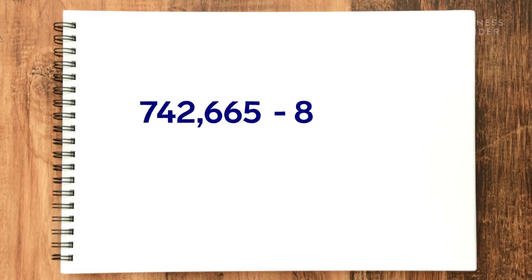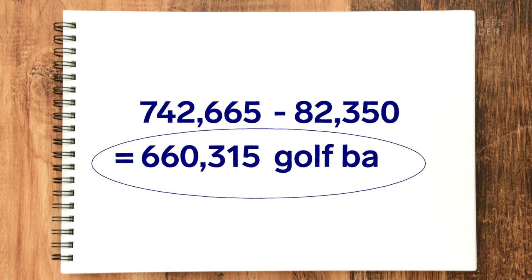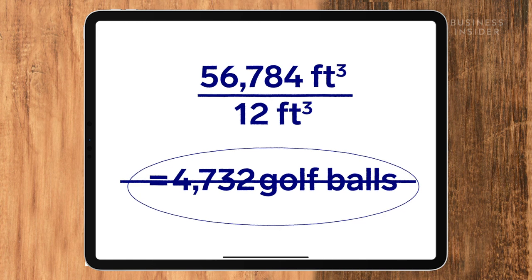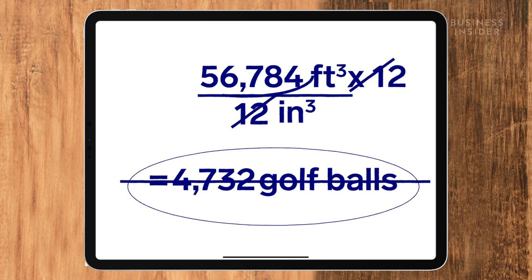That really doesn't feel right. So I'll do 742,665 minus 82,350 to get our grand total: 660,315 golf balls. Wait — I did 12 cubic feet, not 12 cubic inches, so there's another step: multiplying by 12. That gives me 56,784 golf balls as my final answer. I have a gut feeling that's too low — I thought it might be closer to a million. I'd probably tweak the size of the golf ball; maybe 25 or 30 can fit in a headrest.